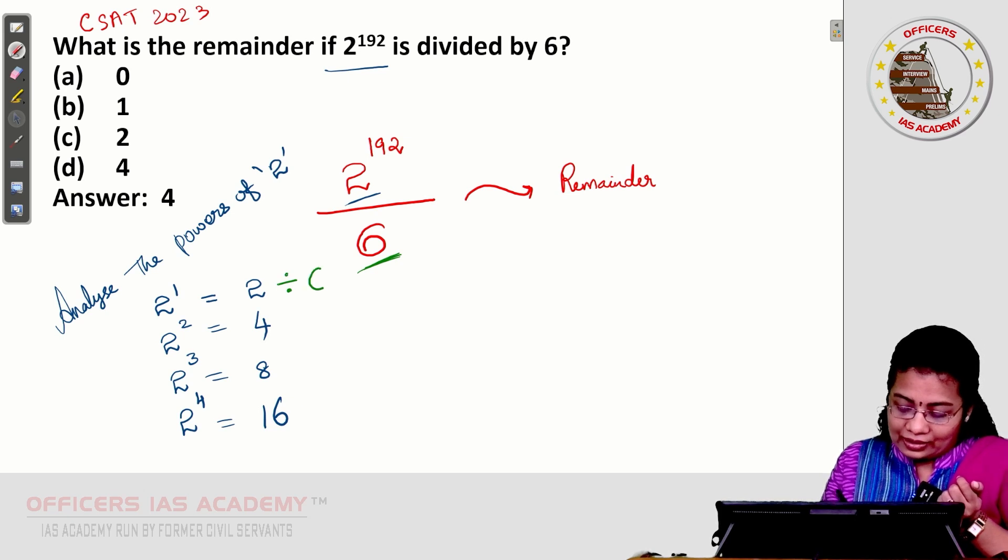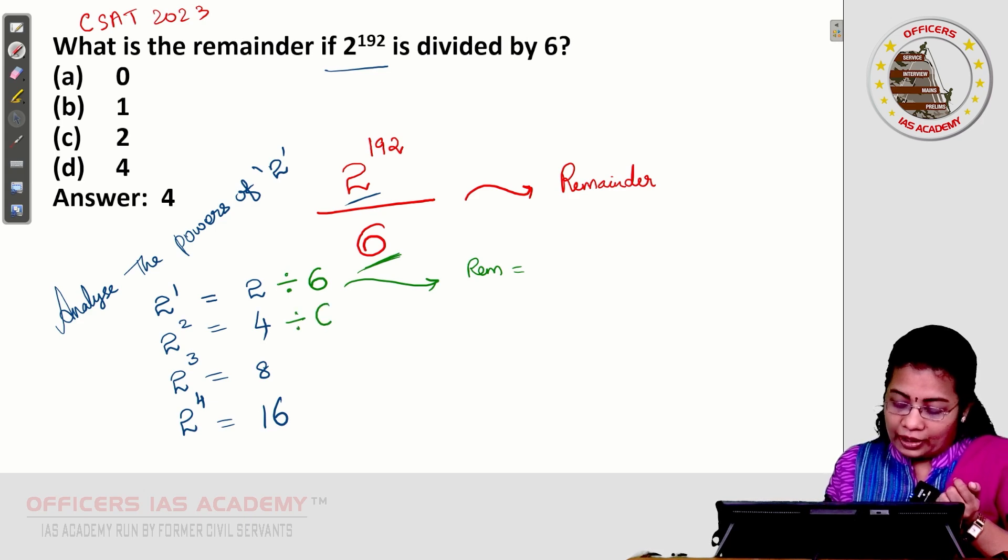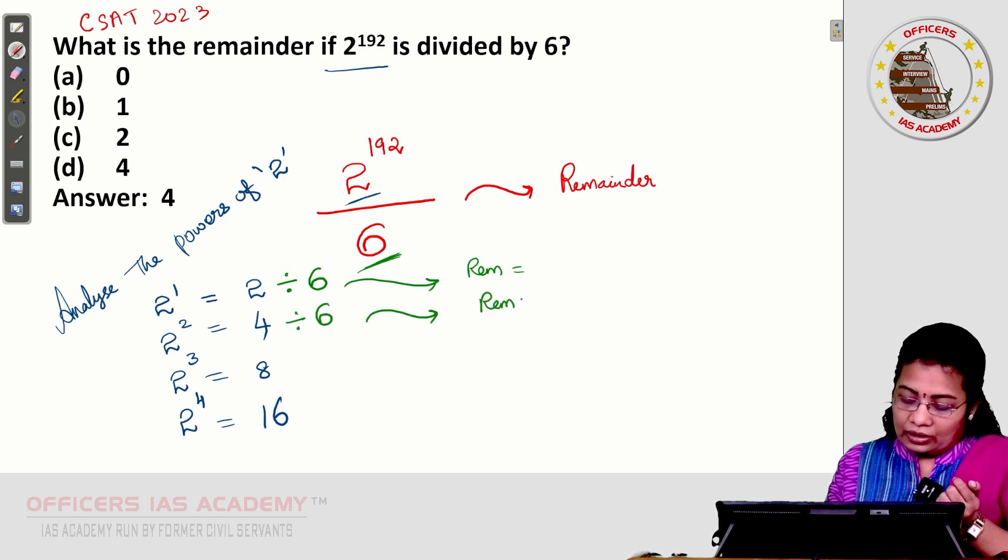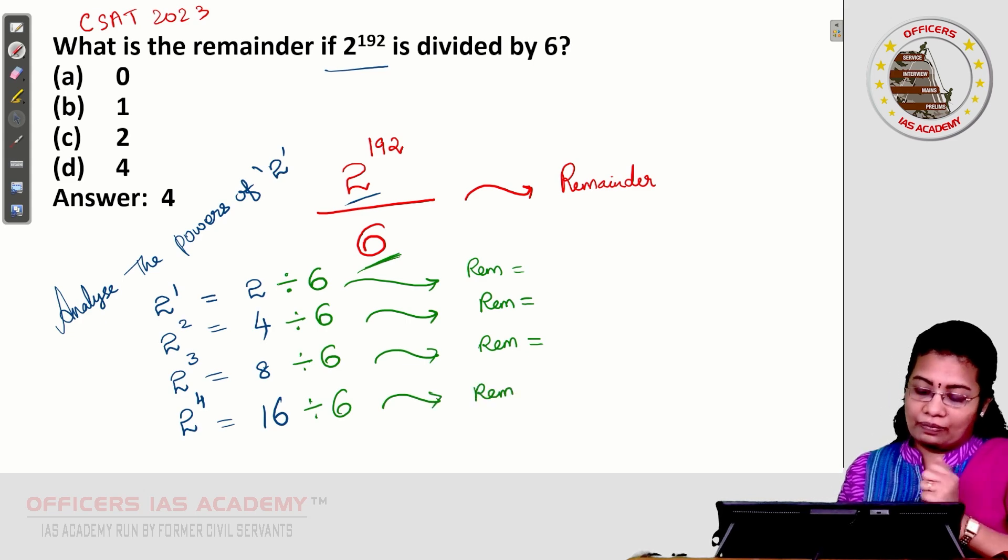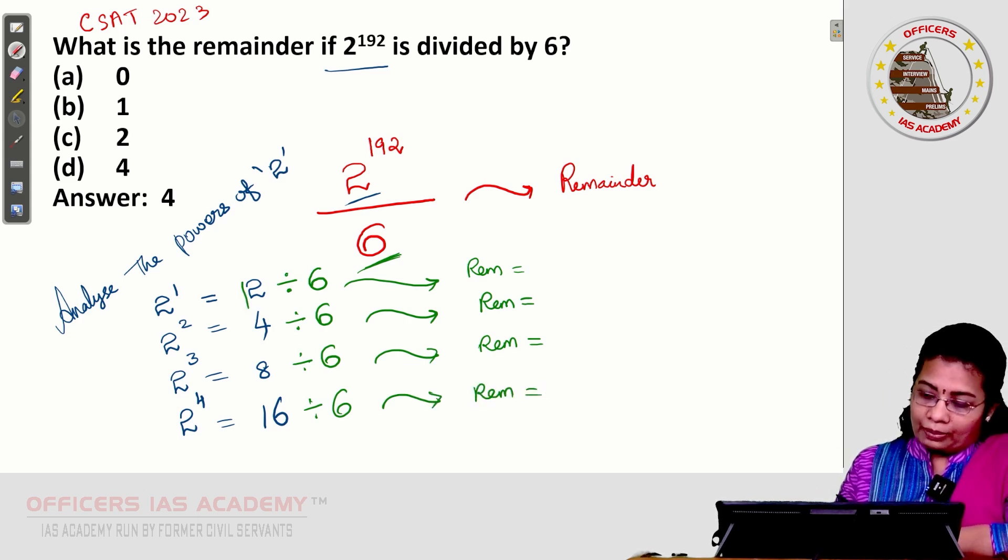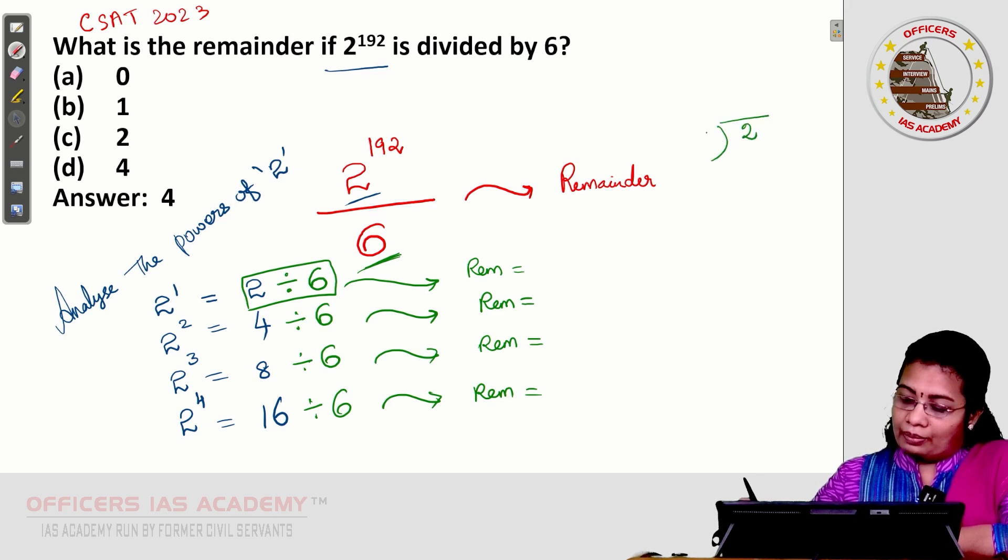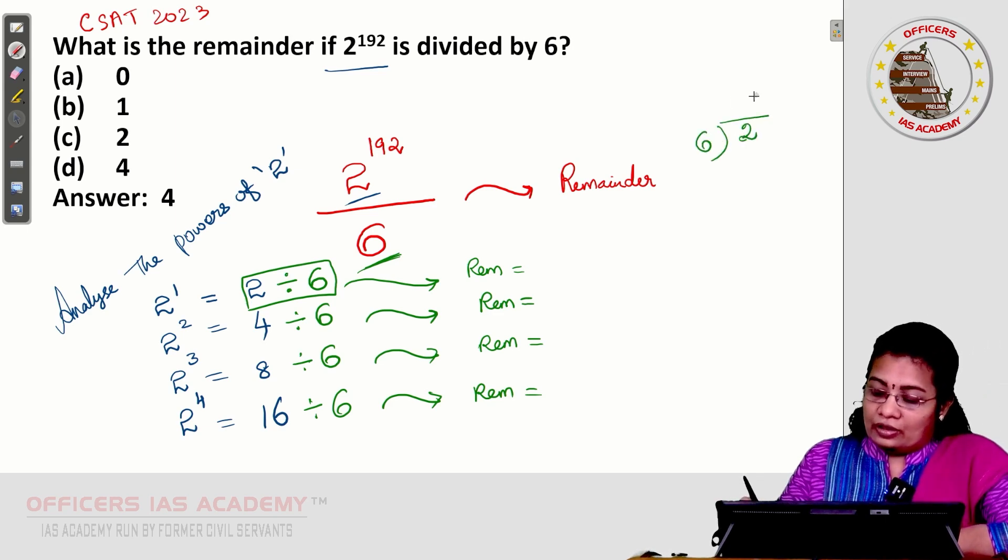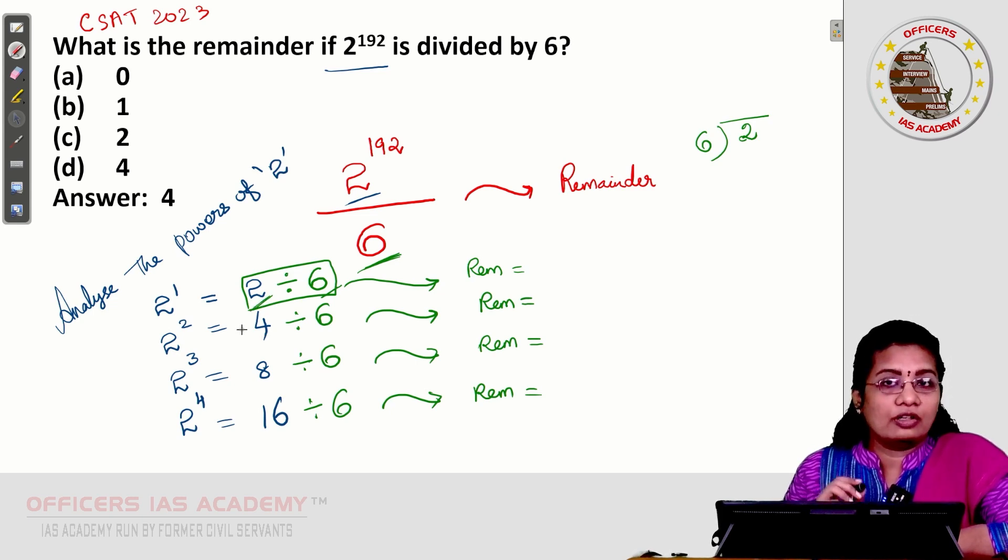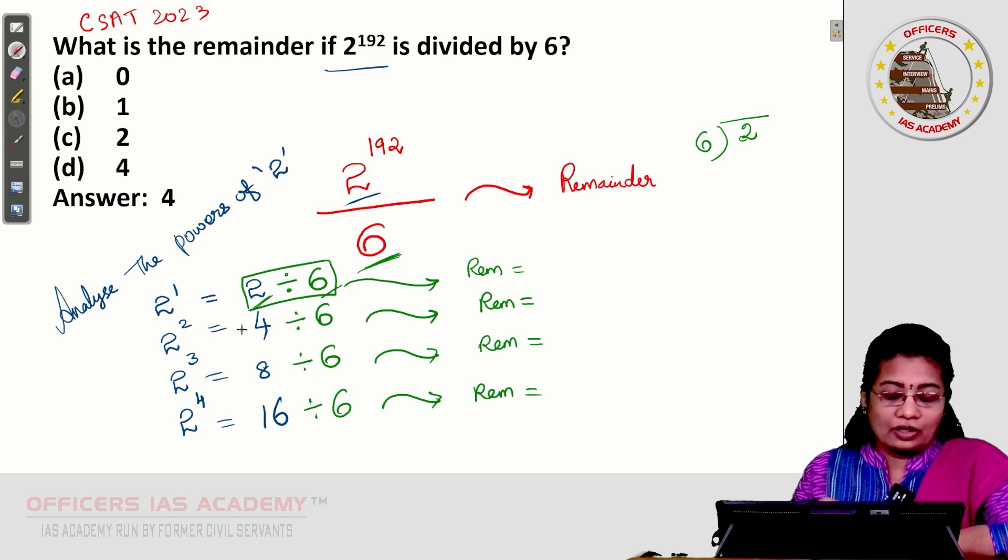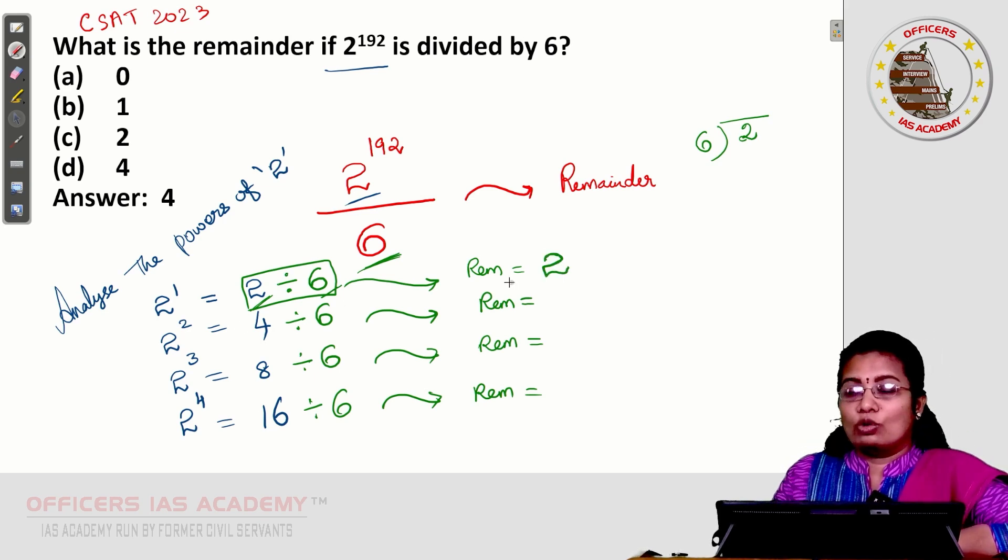When 2 divided by 6, what is the remainder? Similarly, 4 divided by 6, what is the remainder? Like that way, you want to divide the expanded value of the powers with 6. The thing is, when 2 divided by 6, the remainder is going to be the same number because 6 is the highest number which is the divisor, 2 is the smallest number which is the dividend. Whenever the dividend is smaller than the divisor, always the remainder equals the dividend. This is the basic rule of division.